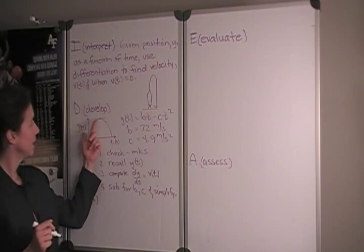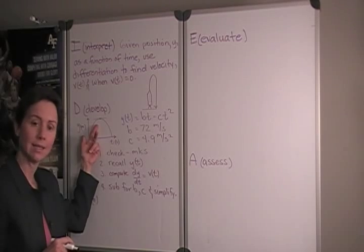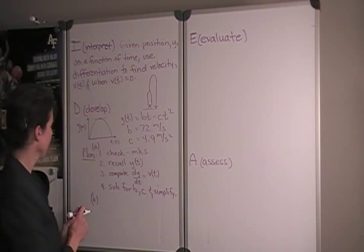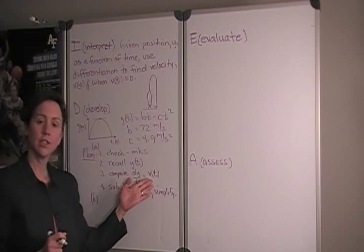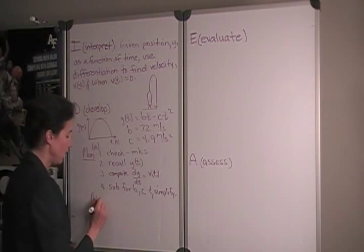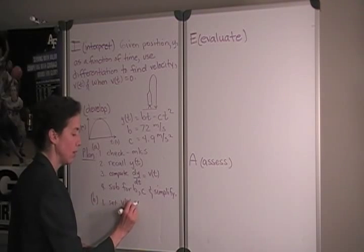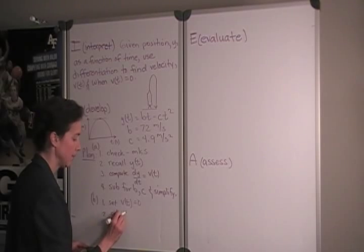So, we expect, then, that that would also give us a way to measure the maximum height, if we were asked that in this problem. What we can do, since we have a general expression for velocity as a function of time now, we will first set v of t equal to zero, and we'll solve for the time.